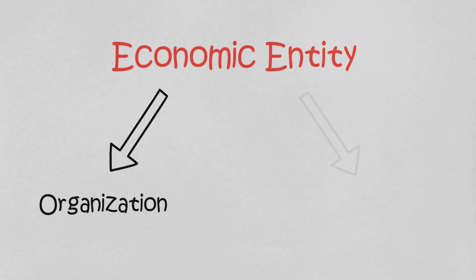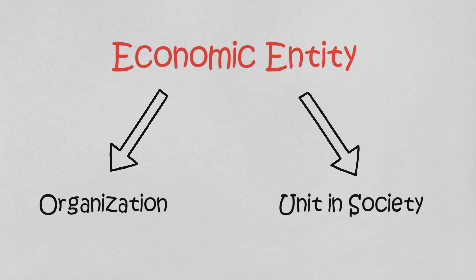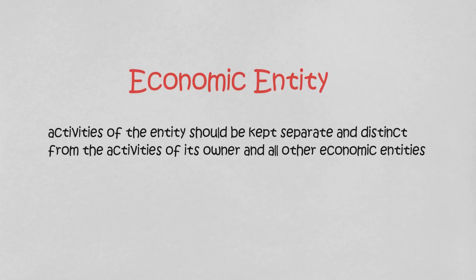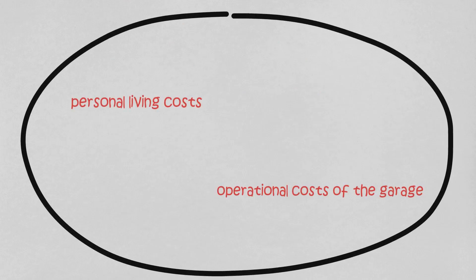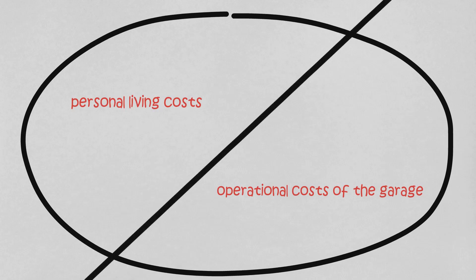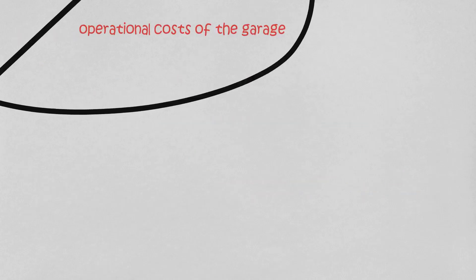An economic entity can be any organization or unit in society — a company, a governmental unit, a municipality, a school district, or a church. The economic entity assumption requires that the activities of the entity be kept separate and distinct from the activities of its owner and all other economic entities. For example, a mechanic named Jim who owns a car repair garage must keep his personal living costs separate from the expenses and operational costs of the garage.